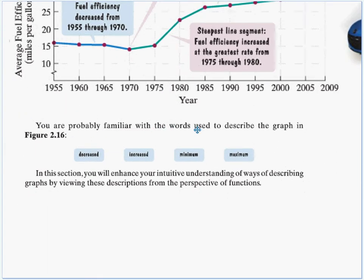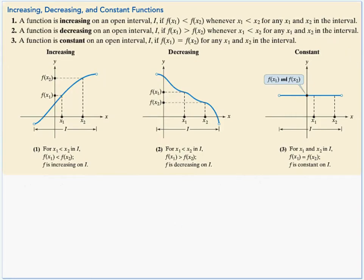The book says you're probably familiar with words used to describe the graph: decreased, increase, minimum, maximum. In this section, we're going to enhance your intuitive understanding by viewing these descriptions from the perspective of the functions. Here's the definition — it's wordy and full of notation with subscripts, but let's read through it and break one apart so you'll see these math definitions aren't that intimidating.